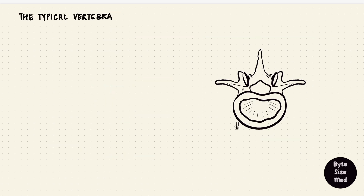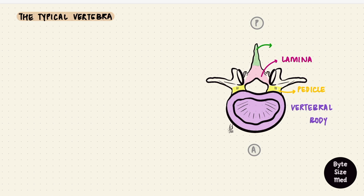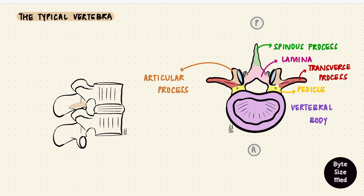If we look at a typical vertebra from above, this is anterior and this is posterior. The vertebral body is anterior and the vertebral arch is posterior. The two are connected by pedicles, which continue as sheets of bone called laminae. At the junction of two laminae is the spinous process extending posteriorly. Extending on either side are transverse processes, and extending above and below are articular processes. The superior and inferior articular processes articulate with the processes on the vertebrae above and below them. The vertebral bodies have a smooth rim.